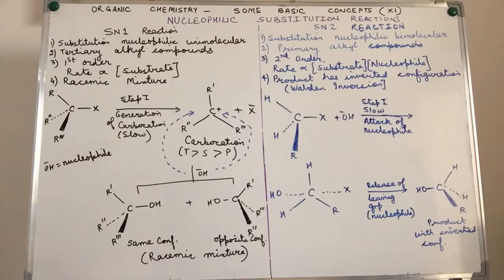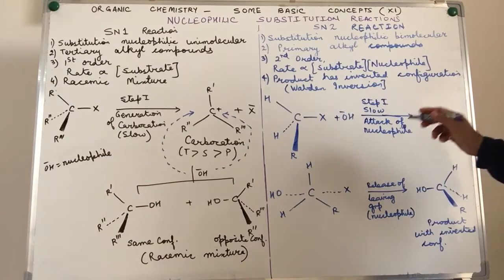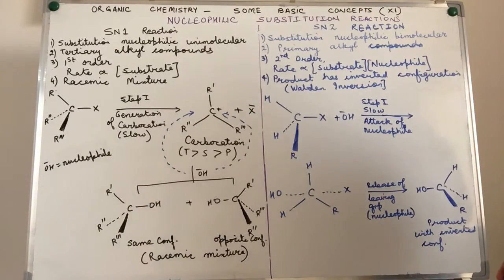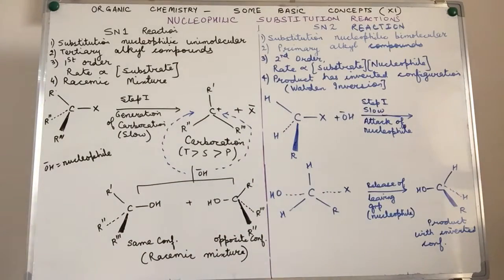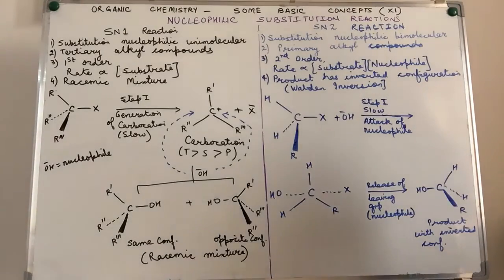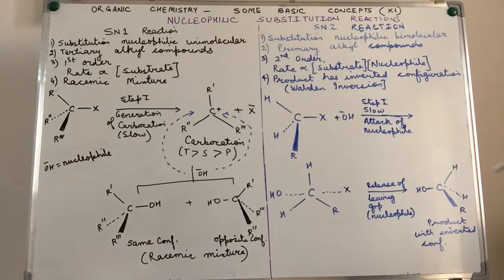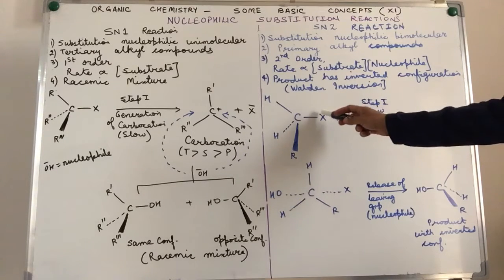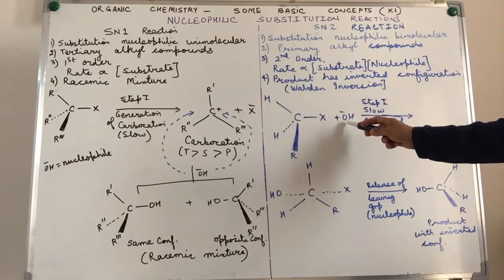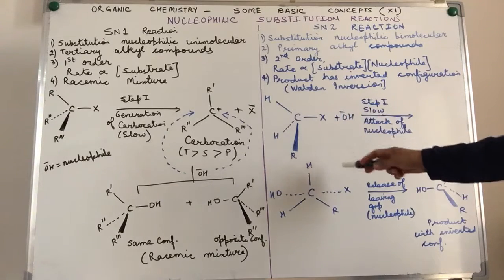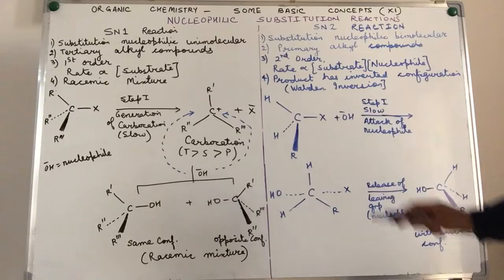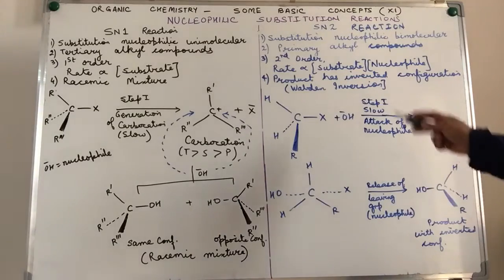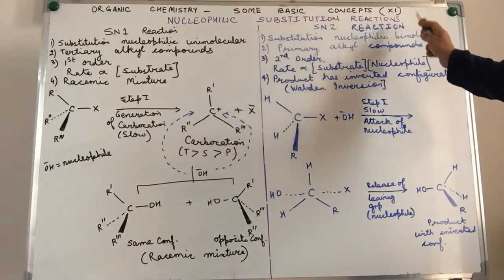Substitution means one atom or group replaces another atom or group — just like a teacher comes to your class in place of a teacher who may be busy. That is what we call a substitute teacher. An element or group is replaced by another atom or group. For example, we have an alkyl halide where the halogen atom is replaced by the nucleophile hydroxyl ion. Since the replacement is taking place by a nucleophile, it is called a nucleophilic substitution reaction.